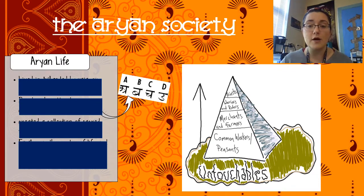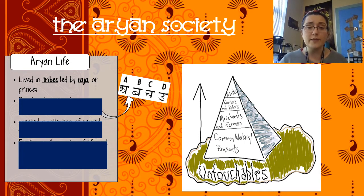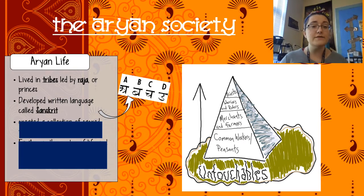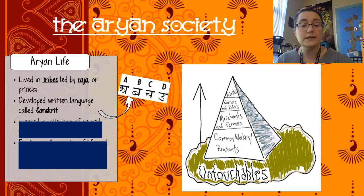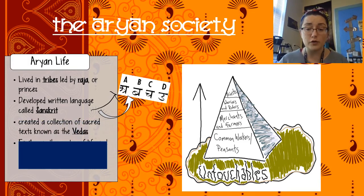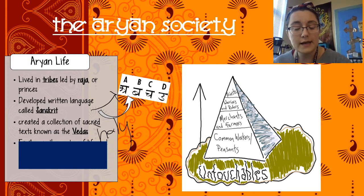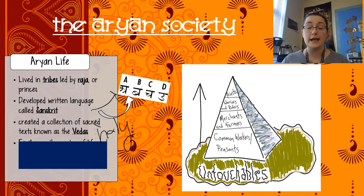Let's talk about what Aryan society would have been like. They lived in tribes led by rajas, or princes — so there's no centralized government; everybody's kind of on their own, kind of like those city states in ancient Mesopotamia. They developed a written language called Sanskrit. And a lot of what we know about the Aryans is because they wrote down a collection of sacred — another word for sacred is holy — texts known as the Vedas. These Vedas are the holy books of the Aryan society.